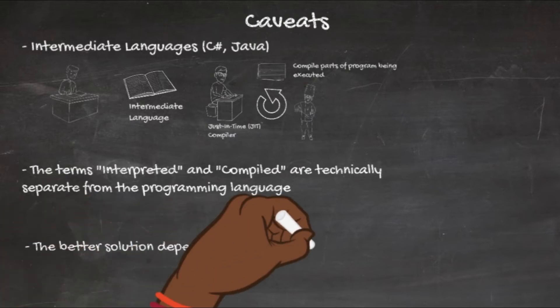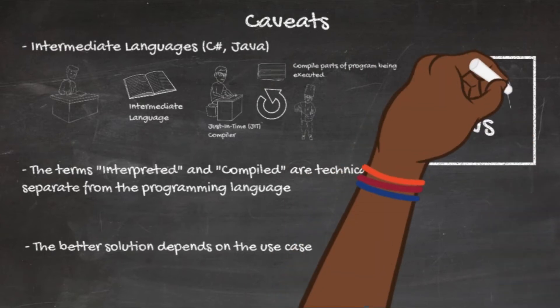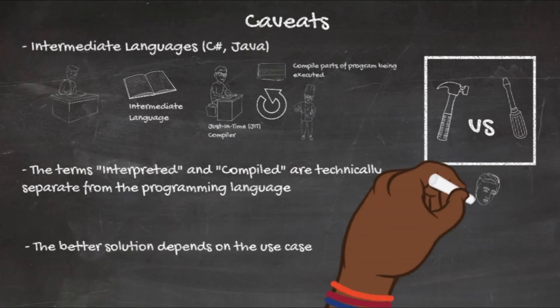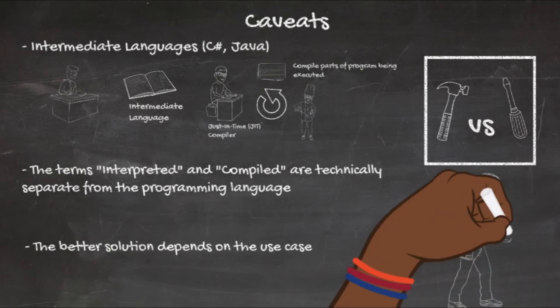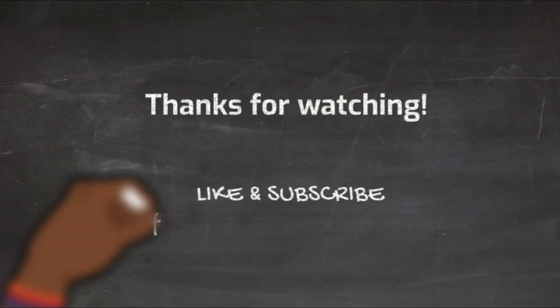If you're hoping I'll pick one as better — I can't, because the solution depends on the use case. It's like asking whether a hammer or a screwdriver is better: you can't answer that without context. A lot of people try to use a hammer on a screw because it's the only tool in their toolbox. If someone tells you compiled languages are always best or interpreted languages are always best, be very skeptical of their programming advice. Thank you for watching — please like and subscribe, and I'll see you in the next tutorial.